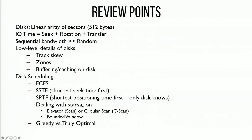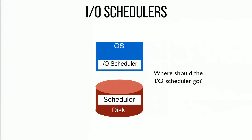To deal with starvation — if you just do shortest seek time first, you could starve out requests that are far away — there are different algorithms. The elevator algorithm has the disk head scan from outer to inner tracks and back, servicing requests as it passes by. The circular scan is a variant where the head only gets requests going in one direction, outer to inner, then moves back out. All these algorithms are still greedy — they always look at the next best request relative to where the head is now, none of them are optimal algorithms looking at all combinations of requests in the queue.